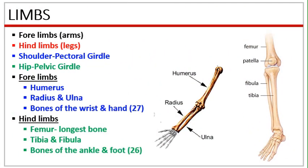Limbs. We have two pairs of limbs: forelimbs that is the arms, and hind limbs that is the legs. Both these limbs help in the movement of the body. The bones of the shoulder are joined to the spine by the shoulder girdle or pectoral girdle. The bones of the hip are joined to the spine by the hip girdle or the pelvic girdle.